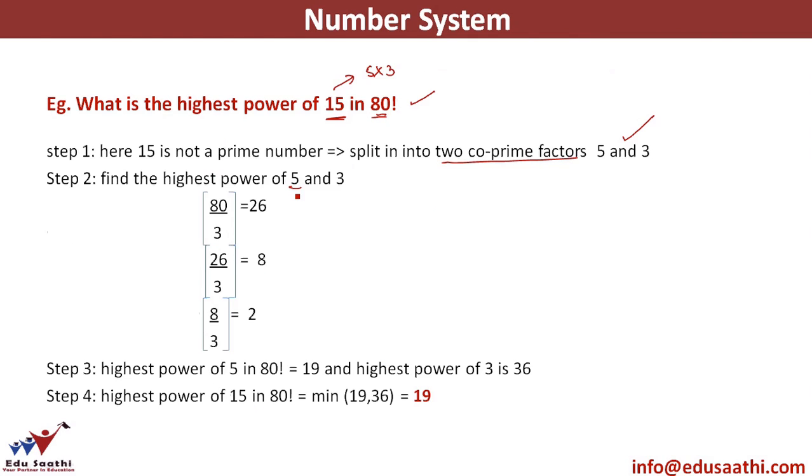Find out the power of 3 in 80 factorial. So I will do it with 3. 80 divided by 3 gives a quotient of 26. 26 when divided by 3 gives a quotient of 8. 8 3's are 24 plus 2. So 8 when divided by 3 gives a quotient of 2. 2 when divided by 3 is 0 and so on. So highest power of 3 would be 26 plus 8 plus 2 which gives you 36. Highest power of 5 which we have already calculated is 19. So I have 19 5's and I have 36 3's. 15 will be formed by a combination of 5 and 3. So the highest power of 15 in 80 factorial will be the minimum of the two values which is 19 and 36 which gives me an answer of 19.